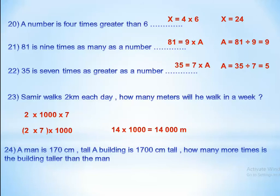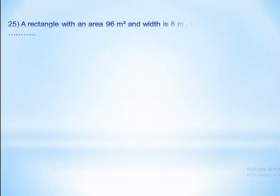A man is 170 cm tall and a building is 1,700 cm tall. How many times taller is the building than the man? We ask: 170 times which number equals 1,700? The answer is times 10. So the building is 10 times as tall as the man.